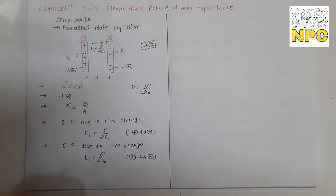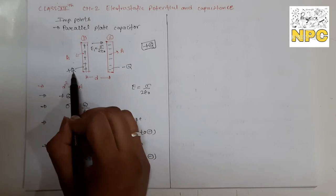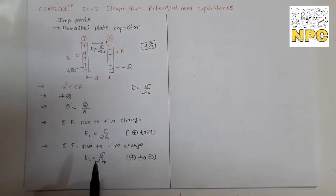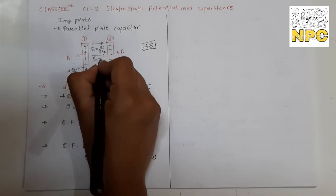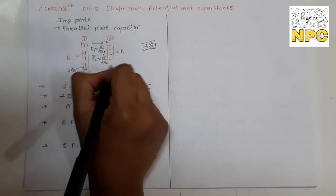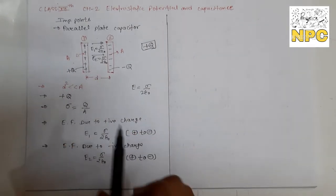The resultant electric field E = E1 + E2 = σ/ε₀. Since σ = Q/A, the charges on both plates are the same, so the electric field is the same (constant) at every point between the plates. This means the electric field inside a parallel plate capacitor is uniform.